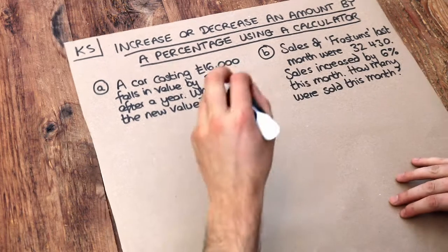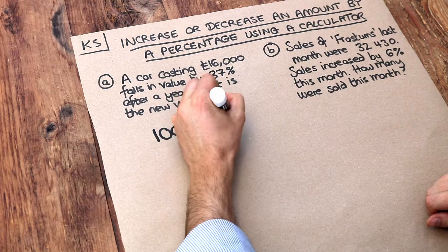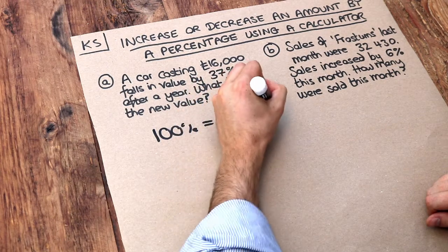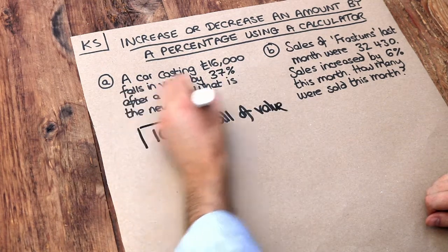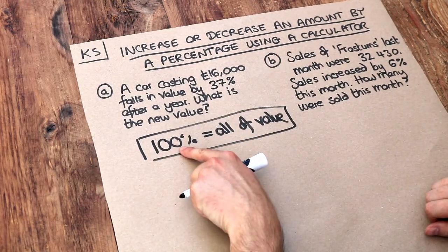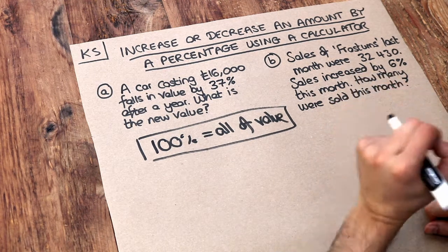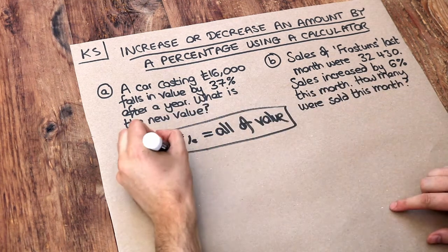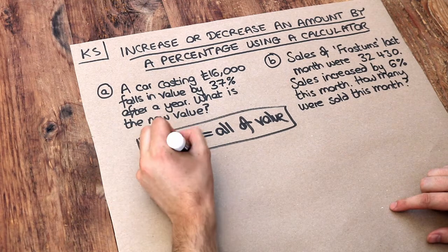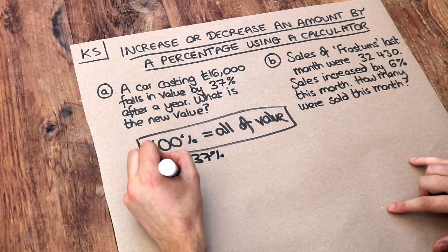Now the way to do this is to think that 100% is equal to all of the value. So everything starts at 100%. Now if it's 100% of its value originally and it falls by 37%, what is its new percentage of its original amount? Well 100% minus the 37% is equal to 63%.